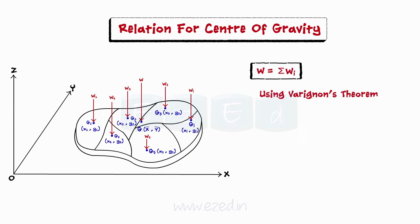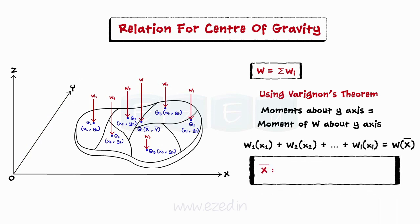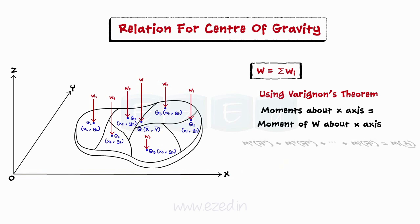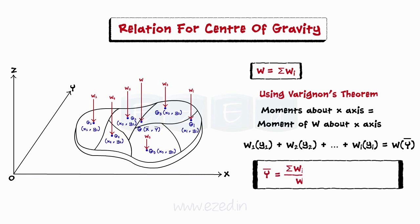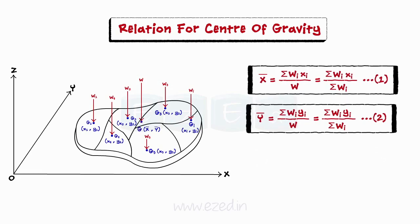We will use Varignon's theorem to locate the point of application of the resultant weight force W. First, we will take moments about the y-axis. Moments of individual weights about the y-axis equals moment of the total weight about the y-axis. Thus, we can derive a relation for x-bar, the x-coordinate of the center of gravity of the body, in terms of the individual weights of the parts and their respective x-coordinates. Similarly, taking moments about the x-axis, moments of individual weights about the x-axis equals moment of the total weight about the x-axis. Thus, we can derive a relation for y-bar, the y-coordinate of the center of gravity. Relations 1 and 2 are used to locate the center of gravity G of a body having coordinates x-bar, y-bar.